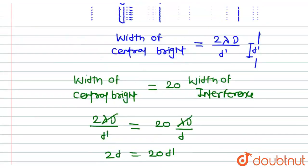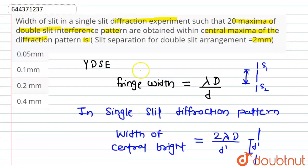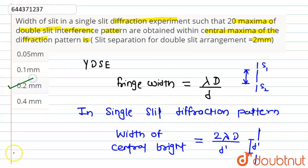So the width of the single slit is 0.2 mm, therefore option C is the correct answer. Thank you.